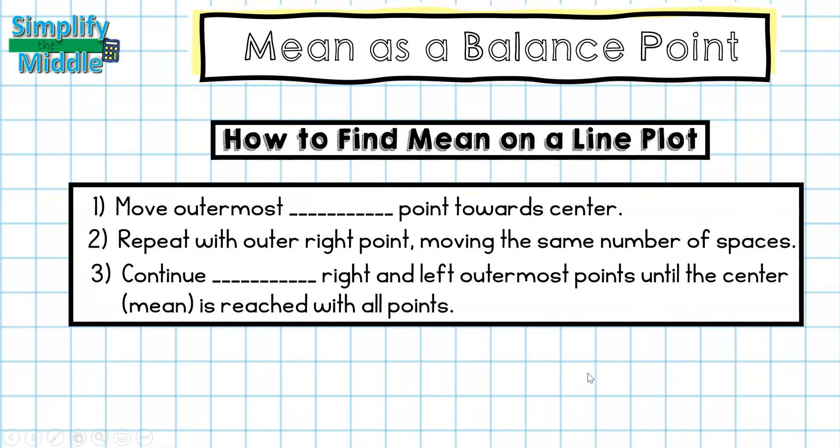For how to find the mean, we'll move the outermost left point towards the center, then we repeat with our outermost right point, moving the same number of spaces each time. We'll continue alternating right and left outermost points until the center, or the mean, is reached with all the points.